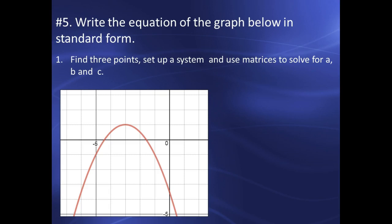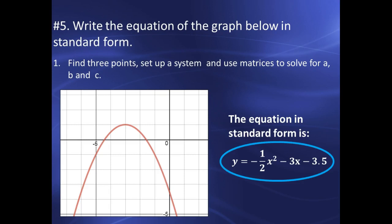The last question, you were asked to write the equation of a graph below in standard form. You were asked a lot of questions about the graph, but this was the first one. By now, I hope that you know you can find three points on the graph, set up a system, and use matrices to solve. I did, and I found that in standard form, the equation for this parabola is Y is equal to negative 1 half X squared minus 3 X minus 3.5. It didn't take me very long to do. Get used to doing this. You're going to need to do it. It saves you a lot of time.